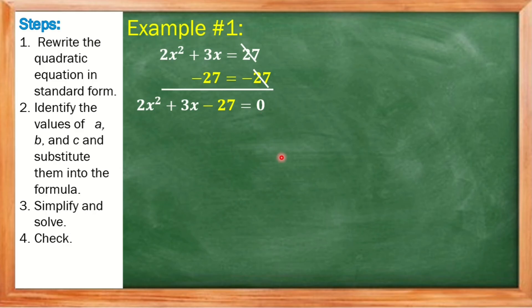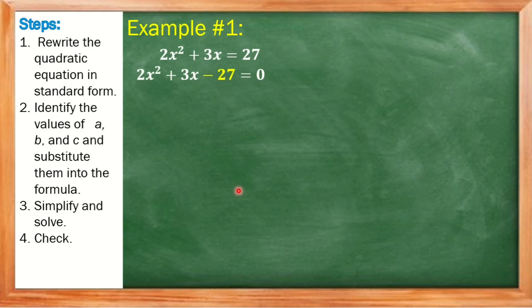Now, if you don't want to do it that way and you want a faster method, you can do transposition just like this. The positive 27 will be transposed to the left side of the equation, making it negative 27. So you can do either process — transposition or using the addition property of equality.